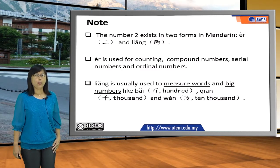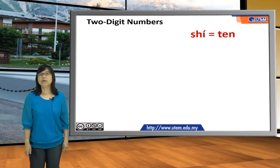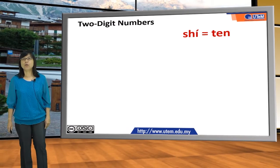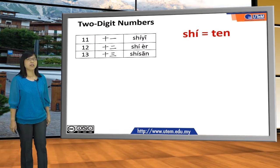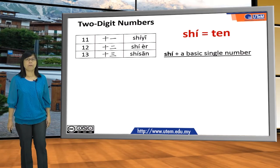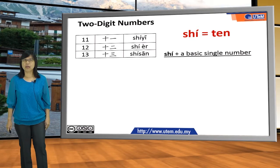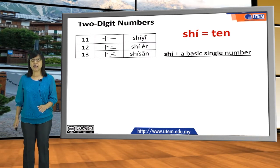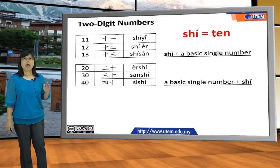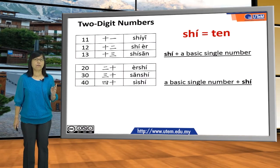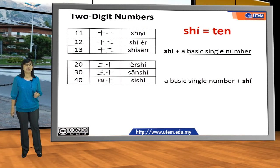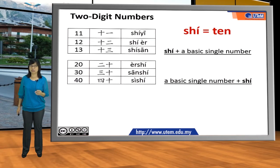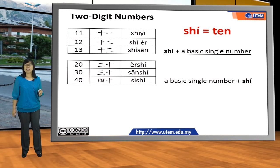Now it's about two-digit numbers. The basic word for a two-digit number is 十, which equals 10. For numbers 11 to 19, we use 十 plus a basic single number. For example, 11 is 十一, 12 is 十二, 13 is 十三. For 20, 30, 40 and so on, we use a basic single number plus 十. For example, 20 is 二十, 30 is 三十, 40 is 四十.